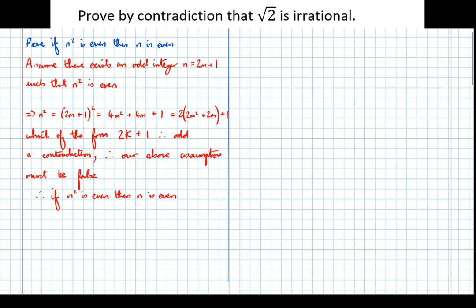So what we've done there, we've reached a nonsensical conclusion, therefore our assumption couldn't have been true, therefore the original statement must be true. If n squared is even then n is even.